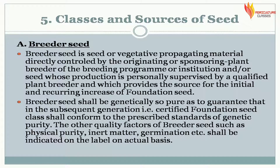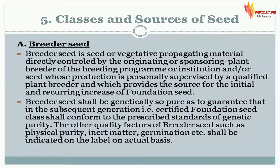Classes and sources of seed. Breeder Seed is seed or vegetative propagating material directly controlled by the originating or sponsoring plant breeder of the breeding program or institution, and seed whose production is personally supervised by a qualified plant breeder, and which provides the source for the initial and recurring increase of Foundation Seed. Breeder Seed shall be genetically pure enough to guarantee that in the subsequent generation the certified foundation seed class shall conform to prescribed standards of genetic purity. Other quality factors of Breeder Seed such as physical purity, inert matter, and germination shall be indicated on the label on actual basis.